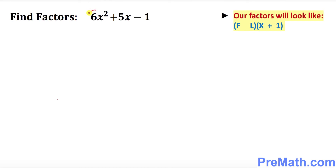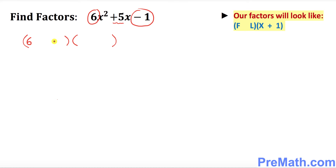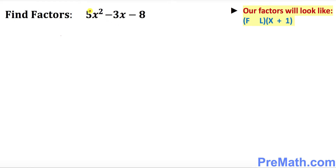Let's look at this example. Our first number is 6 and the last number is negative 1. When you add them you get positive 5, which means we can factor them out. So first, put down 6; the last number is negative 1; and here always x plus 1. Your next step is put x right up here, and that is your answer.